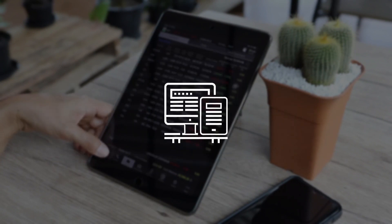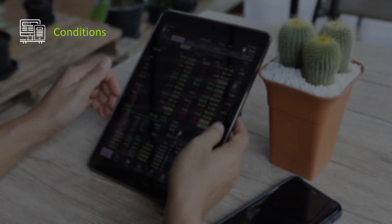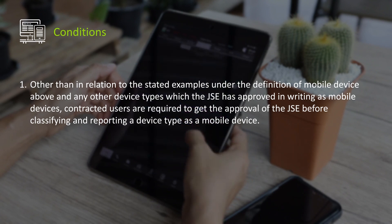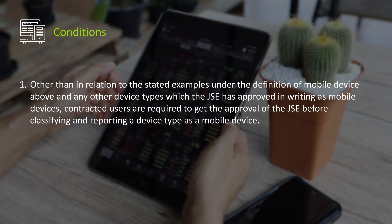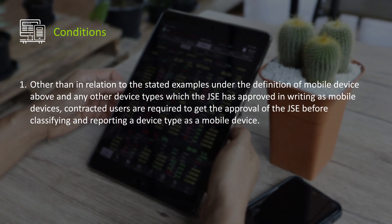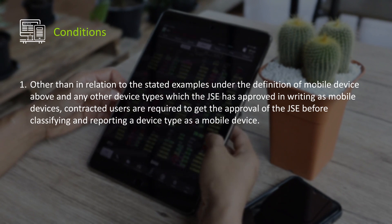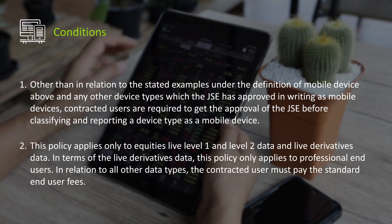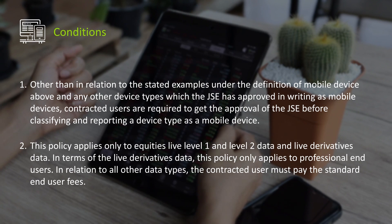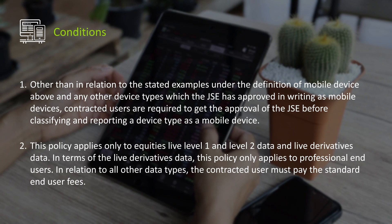Conditions. Other than in relation to the stated examples under the definition of mobile device above and any other device types which the JSE has approved in writing as mobile devices, contracted users are required to get the approval of the JSE before classifying and reporting a device type as a mobile device. This policy applies only to equities live level 1 and level 2 data and live derivatives data. In terms of live derivatives data, this policy only applies to professional end users.